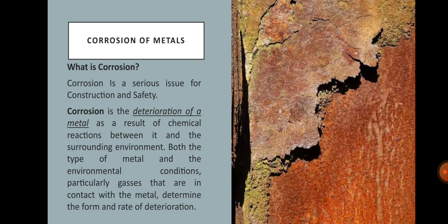The first topic under Chapter 10 is Corrosion of Metals. Corrosion is a serious issue for construction and safety. It is the deterioration of a metal as a result of chemical reactions between it and the surrounding environment. Both the type of metal and the environmental conditions, particularly gases that are in contact with the metal, determine the form and rate of deterioration.